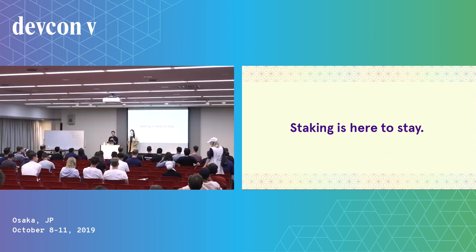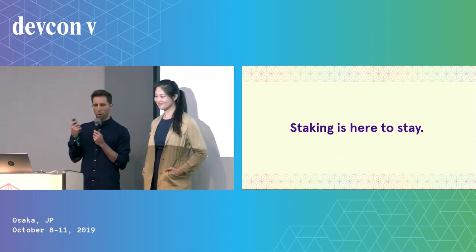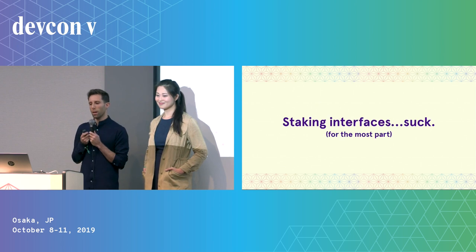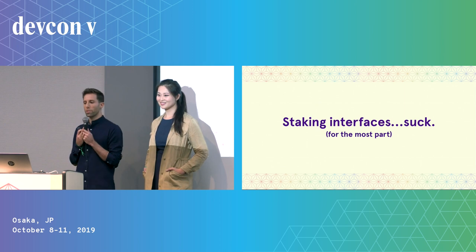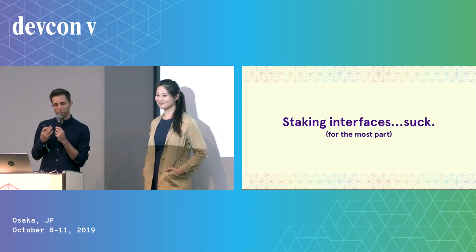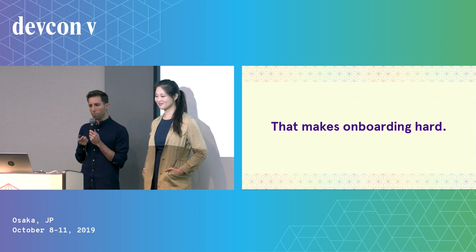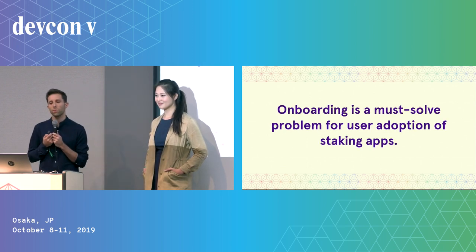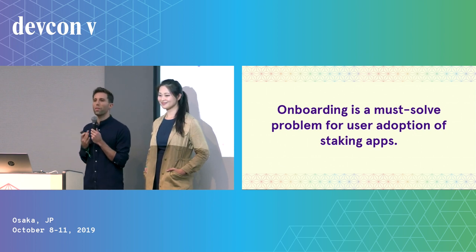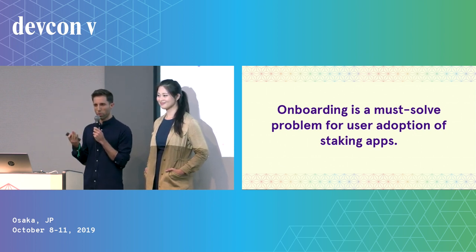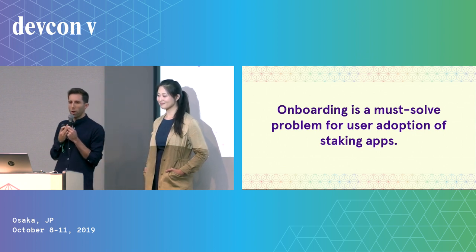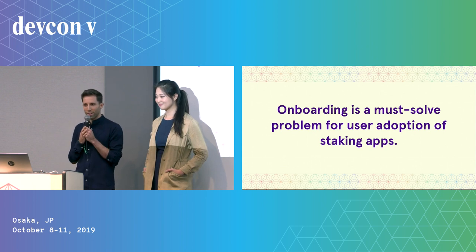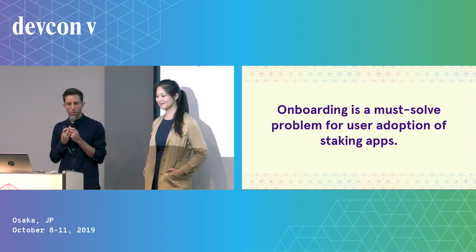We're looking forward to seeing the first million users onboarded and participating in these networks. But there's a problem. Staking user interfaces — the gateway to participate in securing these networks — kind of suck for the most part, and that makes onboarding really hard. Studies have shown that if it takes more than five minutes to onboard a user, they'll most likely drop off or give up. So we're going to have a real hard time onboarding the first million staking users if it takes more than five minutes to stake.